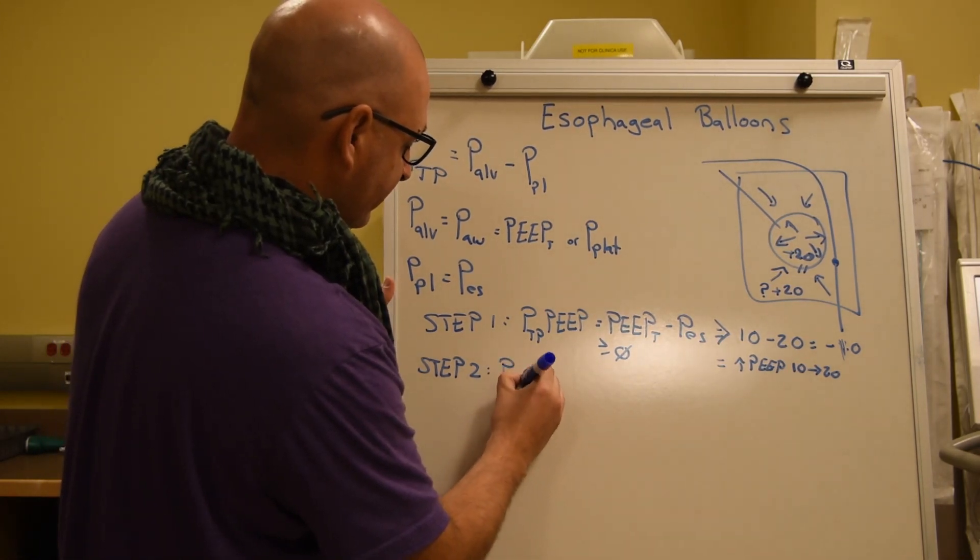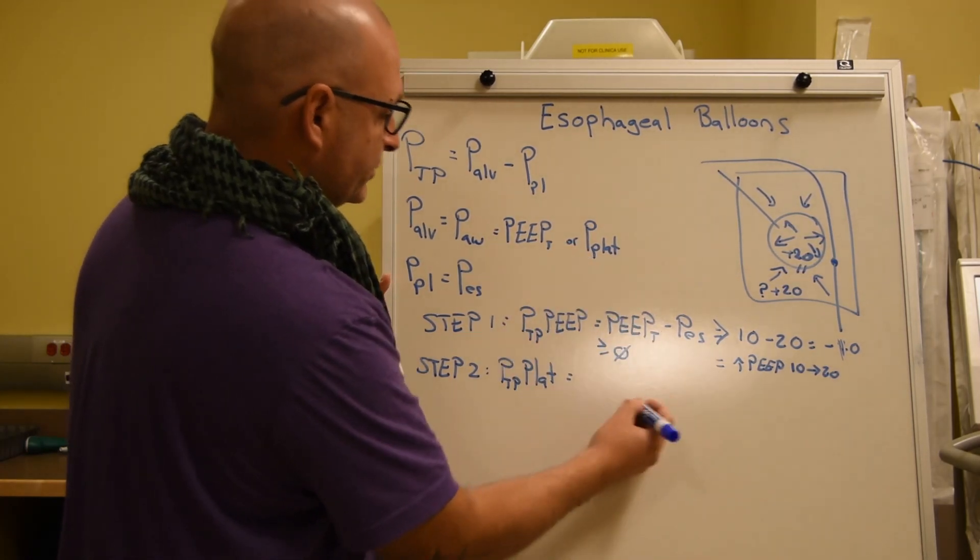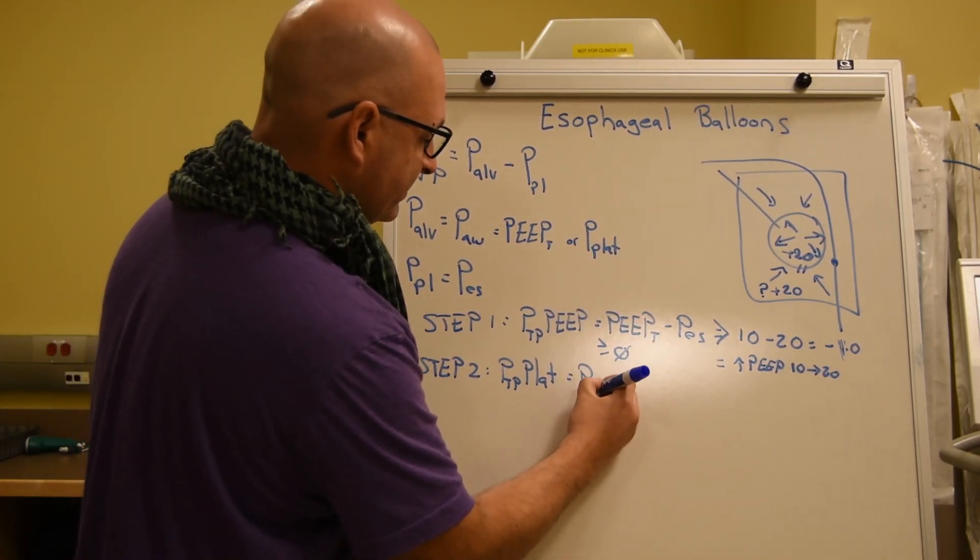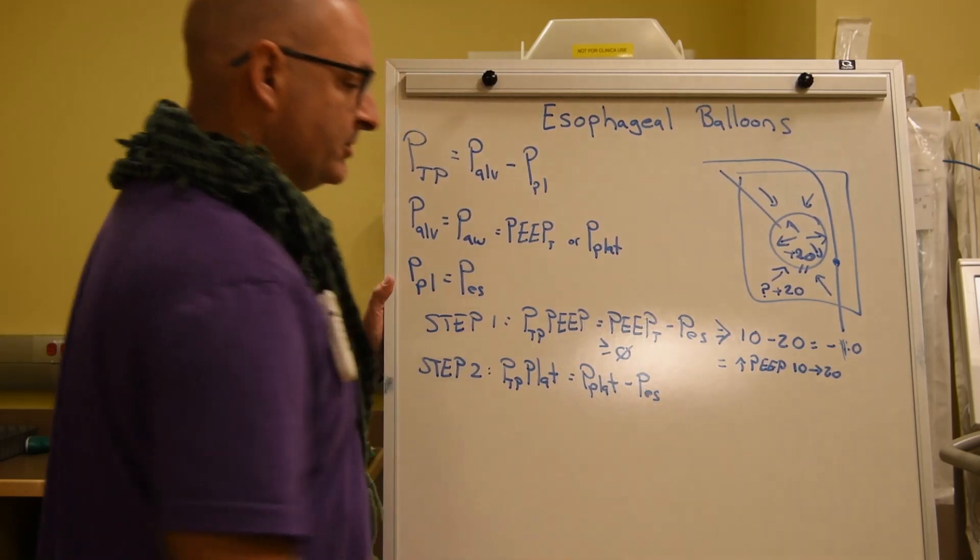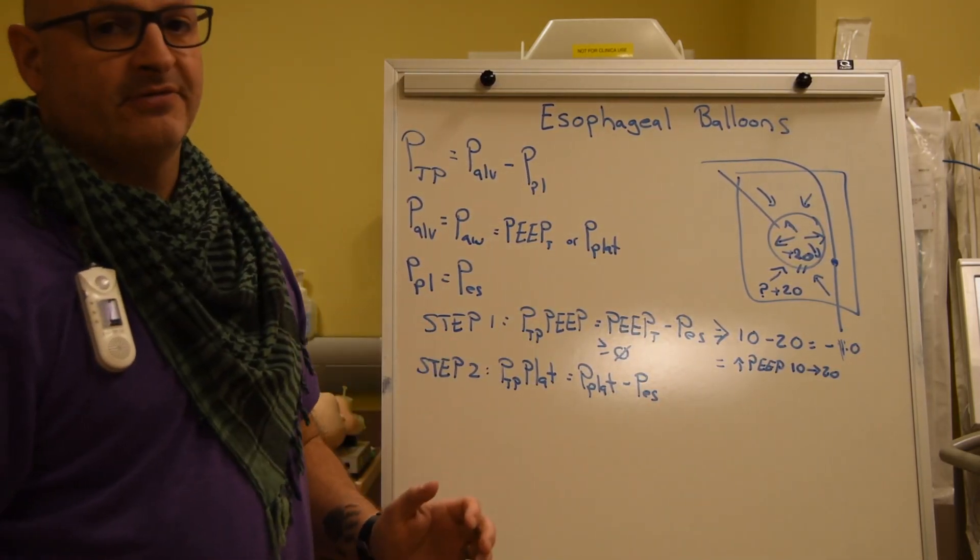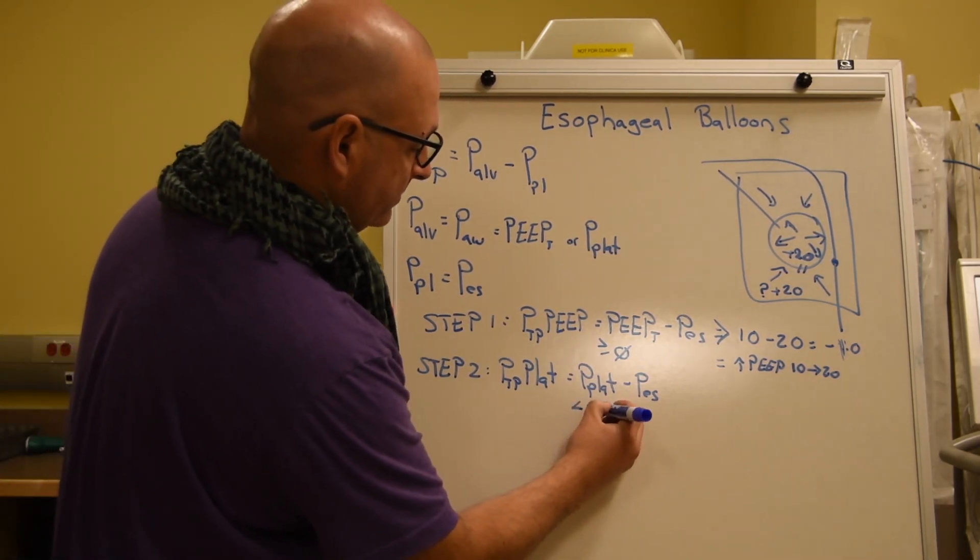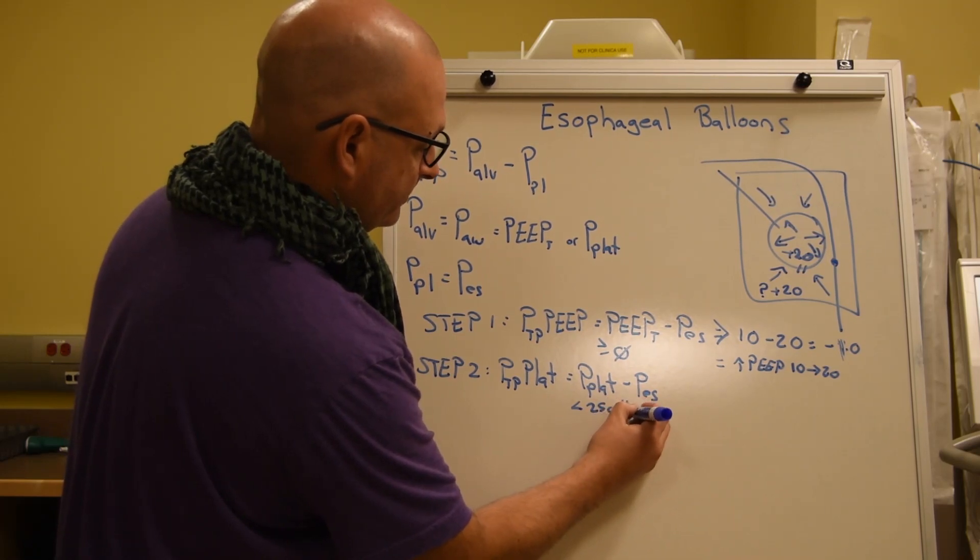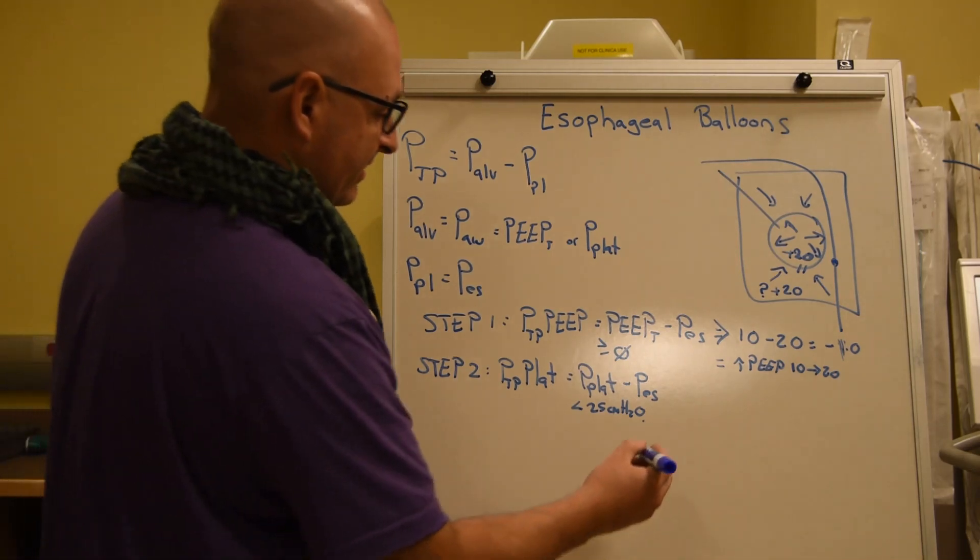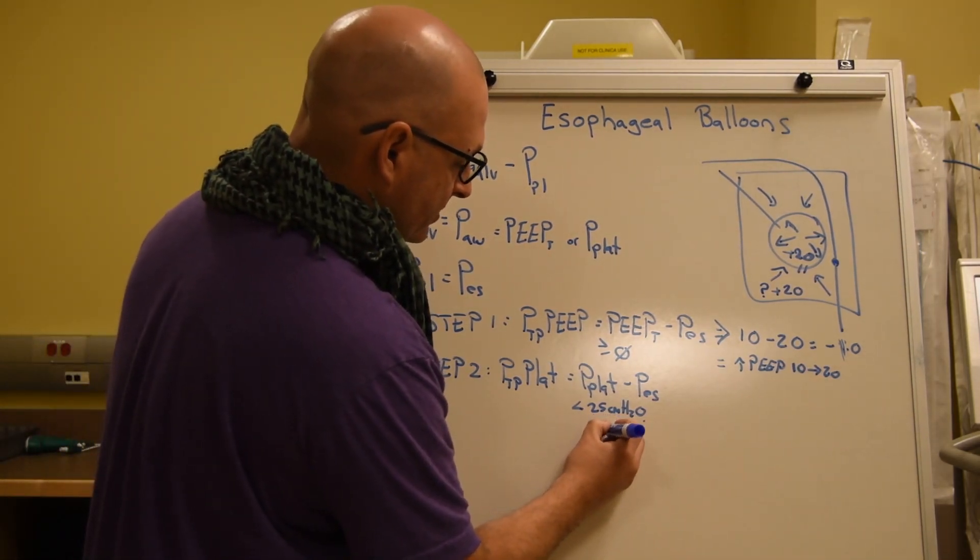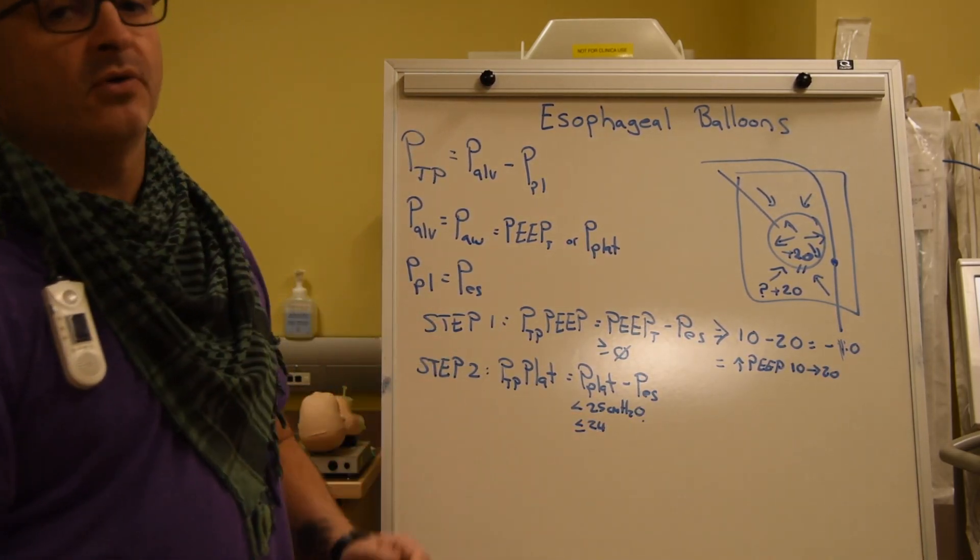Here we're trying to identify our transpulmonary plateau. Using our surrogates, we need to identify our plateau pressure and subtract our esophageal pressure. Our target for this is less than 25 centimeters of water. Now, I say less than, not less than or equal to. In fact, we can go less than or equal to 24 centimeters of water.